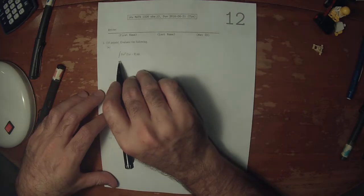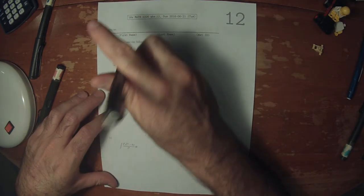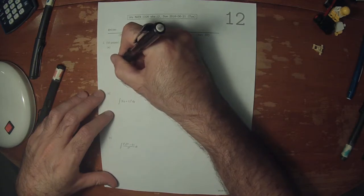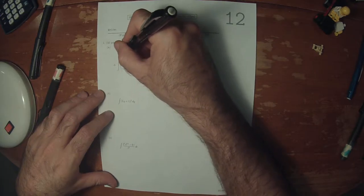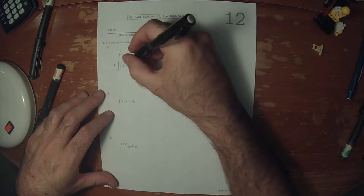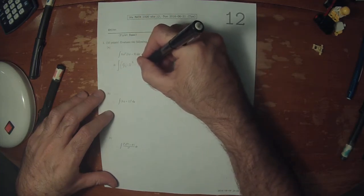So to do the first one, you need to distribute this. So 8 times 5 is 40, and then x squared times x is x cubed, minus 8 times 9 is 72, and x squared.